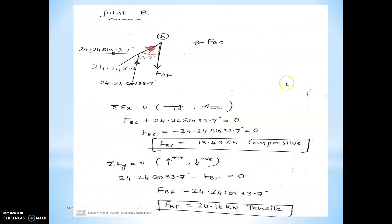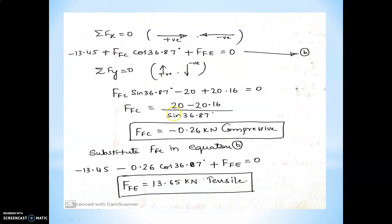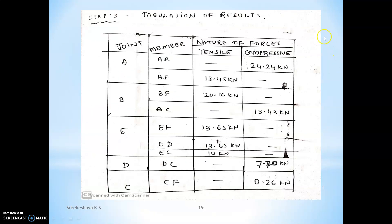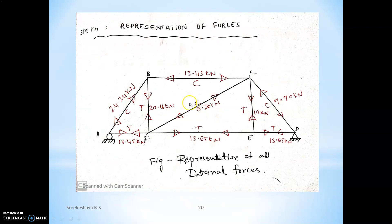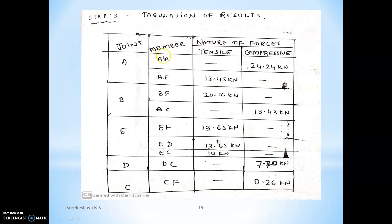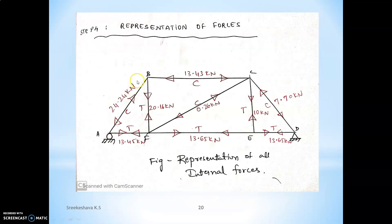Apply equations sigma Fx equals 0 and sigma Fy equals 0 to compute the nature of forces at joint A. Similarly, apply to all joints — joint B, joint F, and so on — until all member forces are determined. Record results in tabular format. For representation: if AB is compressive 24.24 kN, forces act towards both joints; if BF is tensile 20.16 kN, forces act away from both joints. Represent all values accordingly. Please follow the instructions carefully, solve a number of problems, and if you have any doubts, please get back to me. Thank you.